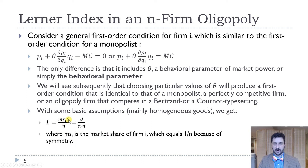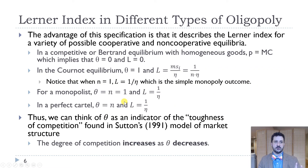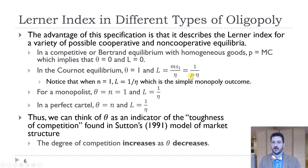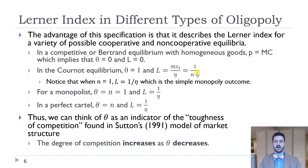We can also express the Lerner Index as firm i's market share times theta over eta. In perfect competition and in a Bertrand equilibrium with homogeneous goods, theta equals zero and price equals marginal cost. In the Cournot equilibrium, theta equals one, so the Lerner Index is market share over eta, or one divided by N times eta — decreasing as N increases, getting closer to perfect competition. When N equals one, we get the monopoly outcome. In a perfect cartel, theta equals N and the Lerner Index equals one over eta.